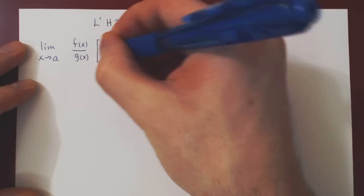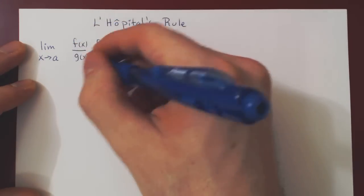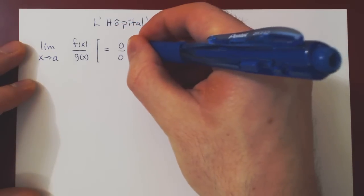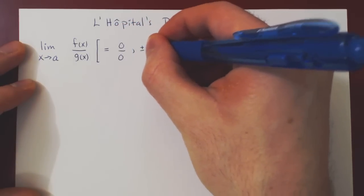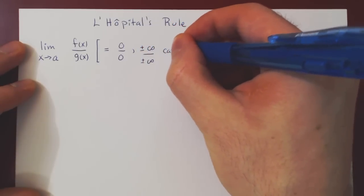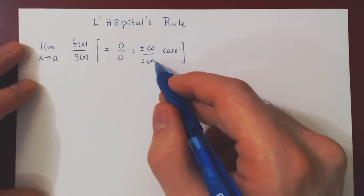And we need to have one of two special cases. Either we get a 0 over 0 case, or plus or minus infinity over plus or minus infinity case. The sign is irrelevant for both the numerator and the denominator.